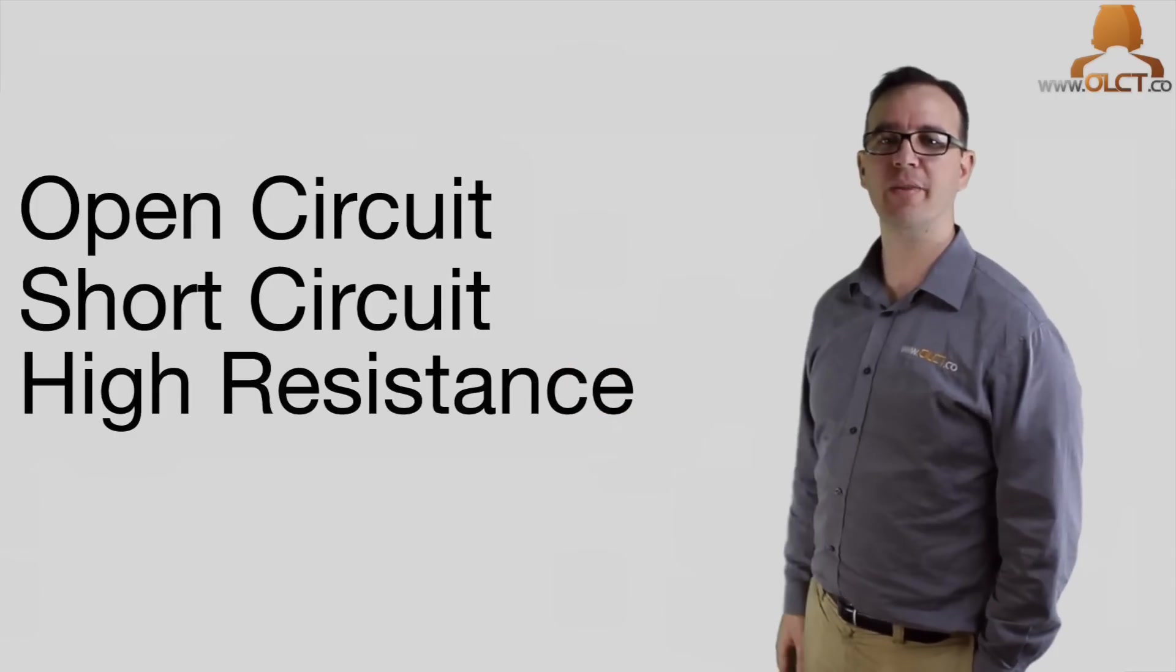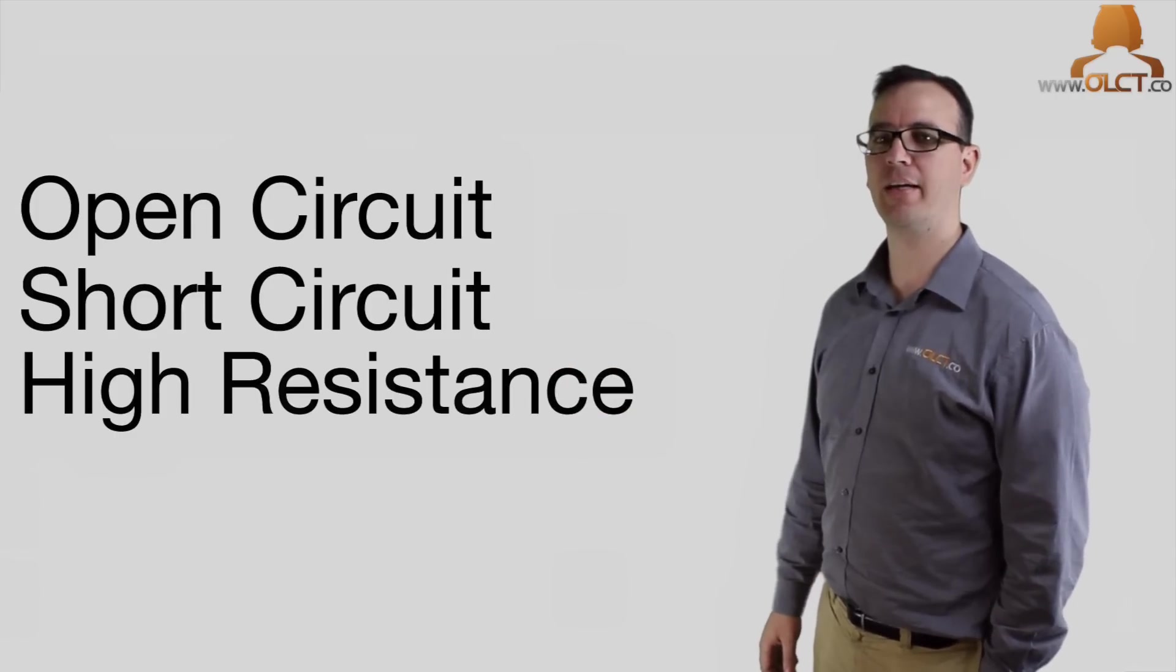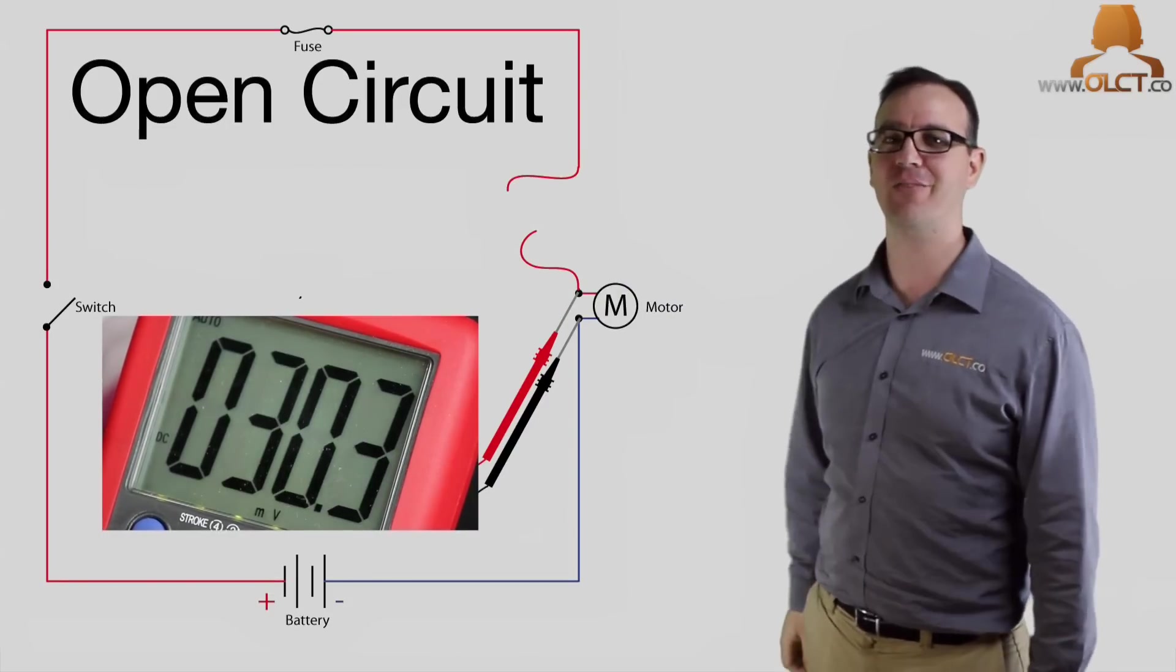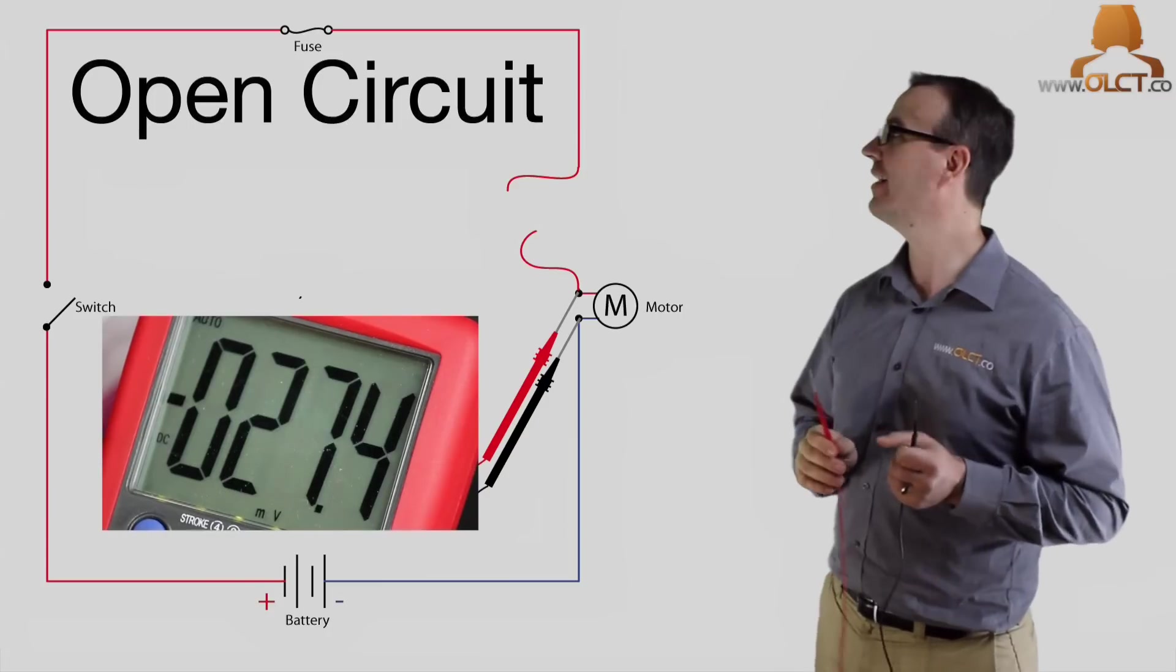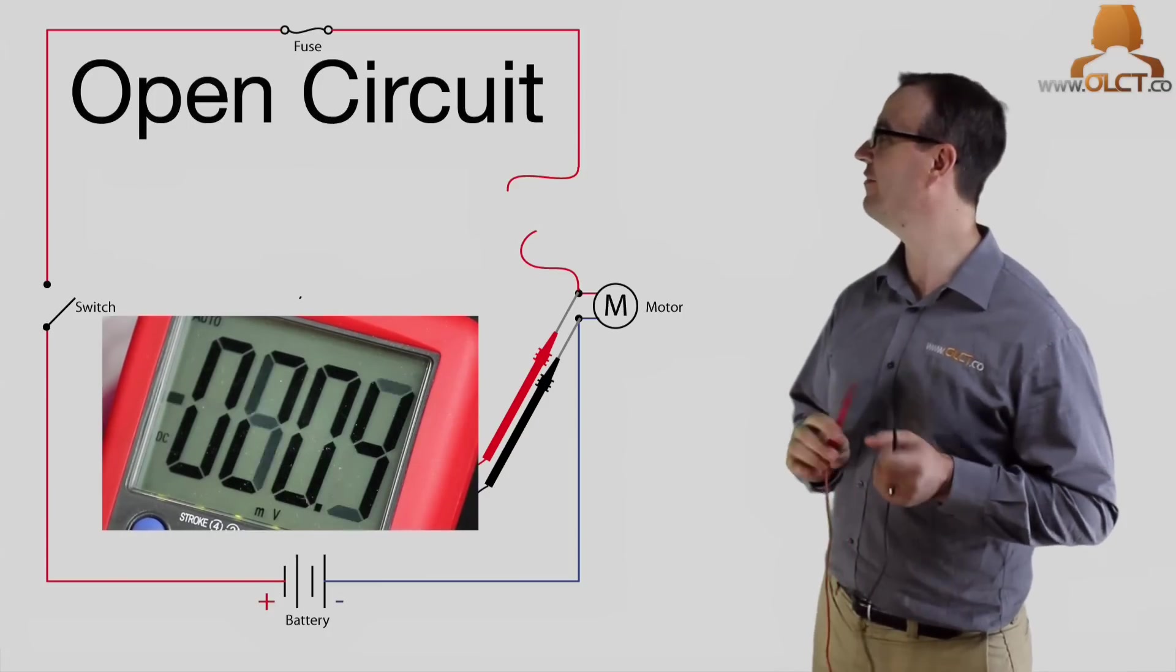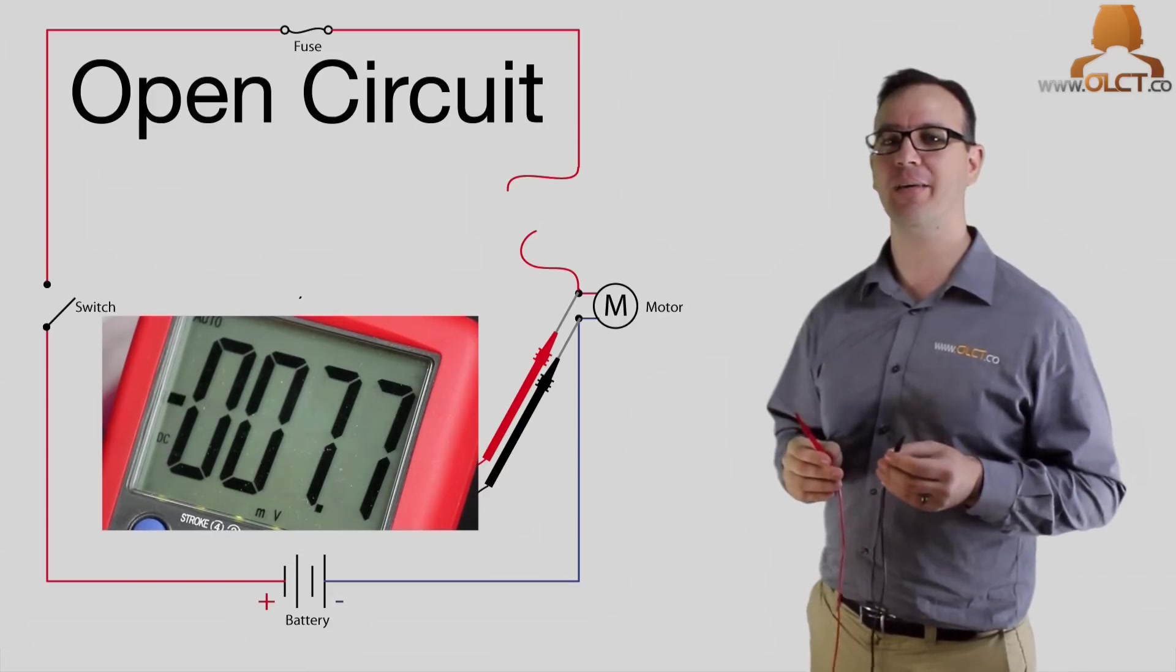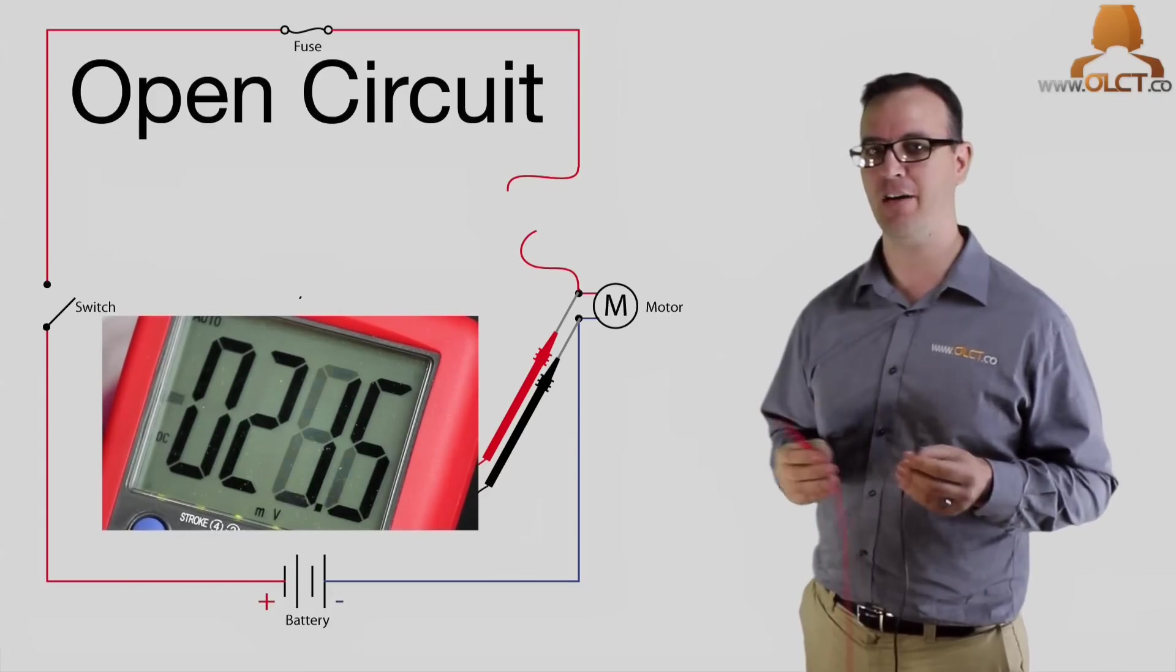I'll show you how we can determine the fault with one simple voltage reading. An open circuit will be displayed as ghost voltage. Notice, with the leads open, the reading on the multimeter fluctuates. Millivolts, volts, millivolts, volts. If we see this during a test, it means quite simply that we have an open circuit.